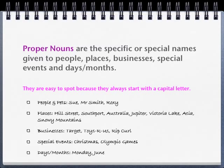Proper nouns are the specific or special names that are given to people, places, businesses, special events and days or months, and these are easy to spot because they always start with a capital letter. For example, people and pets: Sue, Mr. Smith and Roxy — they all start with a capital.